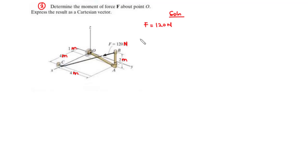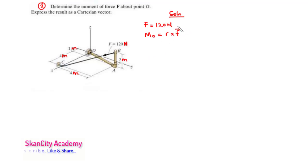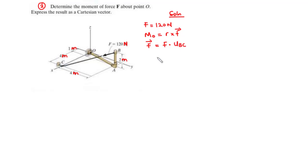In the previous video, we said that the moment of a force about a point O in a three-dimensional space is given by the cross product of R and F, where R represents the position vector directed from O to any point on the line of action of the force F, and F is the force represented as a Cartesian vector. So first, let's find the unit vector directed along line BC.